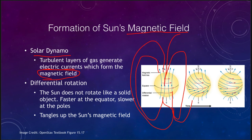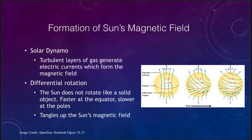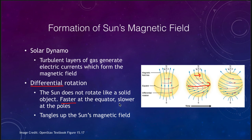Remember that the sun rotates differentially, meaning it spins faster at the equator. So over time, the magnetic field lines near the equator are moving faster while those near the poles are moving slower, and the equator will lap the poles because of this differential rotation. This differential rotation — faster at the equator, slower at the poles — tangles up the magnetic field over time.